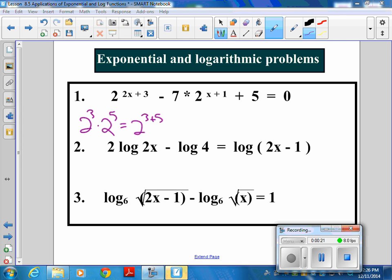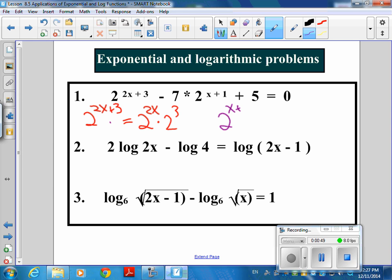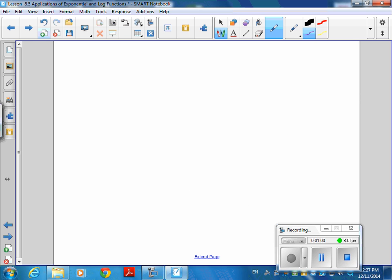If I have 2 to the 2x plus 3, this is the same as what? Go backwards. 2 to the 2x times what? 2 to the 3. If you can see that, these are going to be a piece of cake. By the way, what's 2 to the x plus 1 the same as? 2 to the x times 2 to the first.